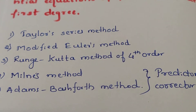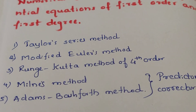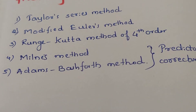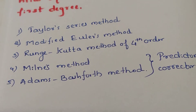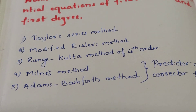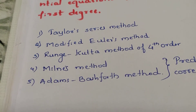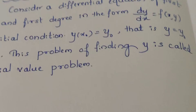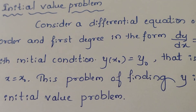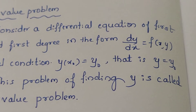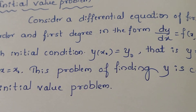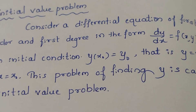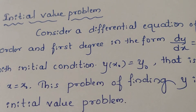All five methods are solved for Initial Value Problems. An initial value problem means you are given a differential equation with initial conditions. Specifically, consider a differential equation of first order and first degree in the form dy/dx = f(x, y), with initial condition y(x0) = y0 — that is, y = y0 at x = x0. This problem of finding y is called an Initial Value Problem: a differential equation with two initial conditions x = x0 and y = y0.